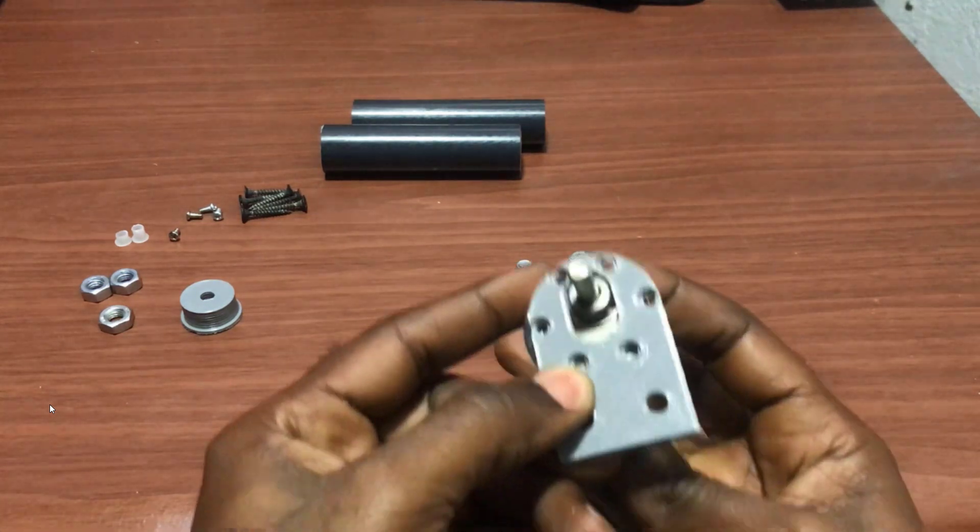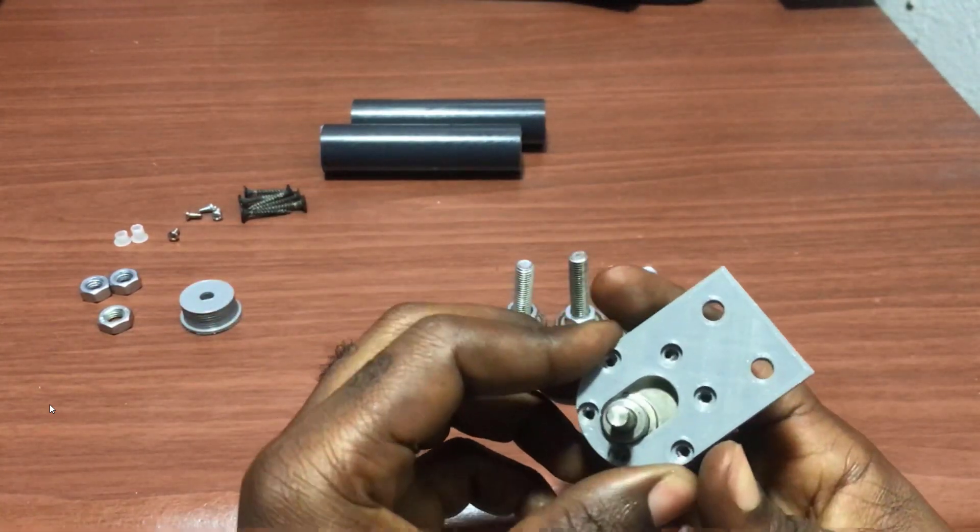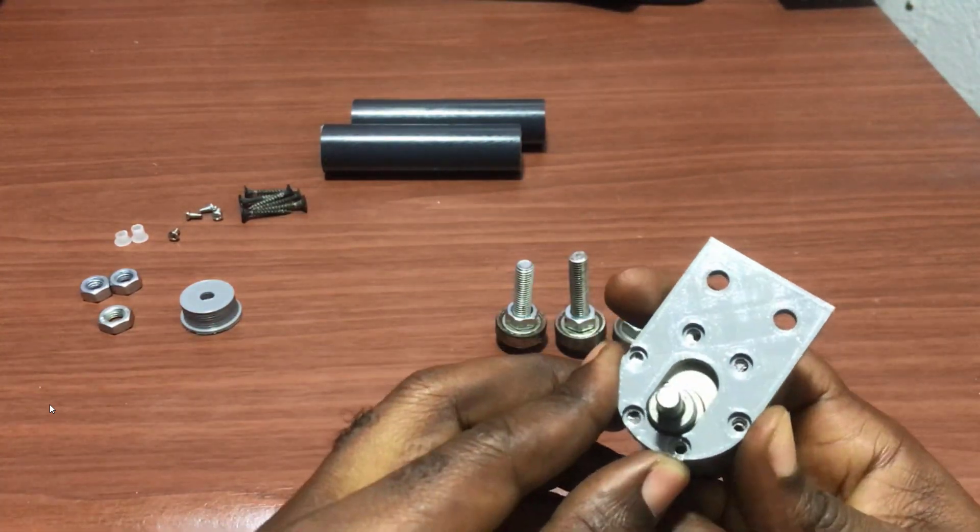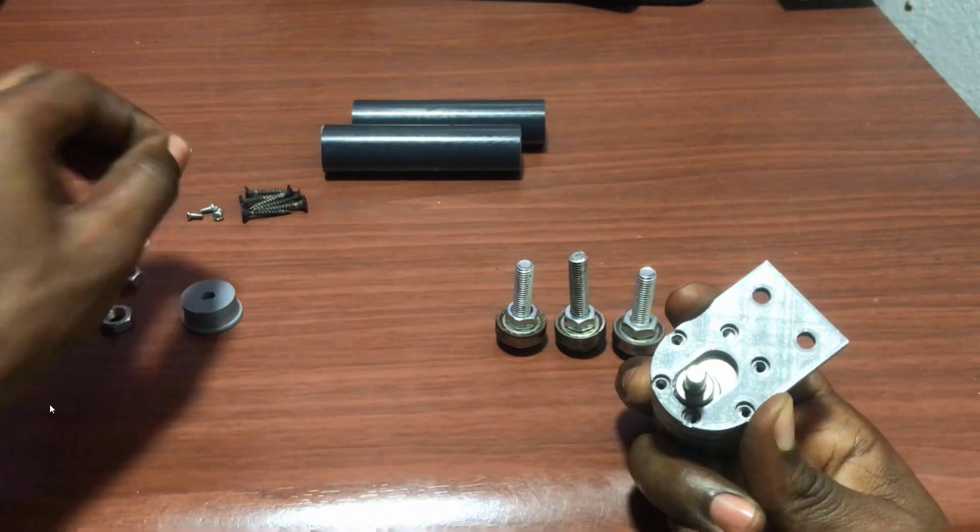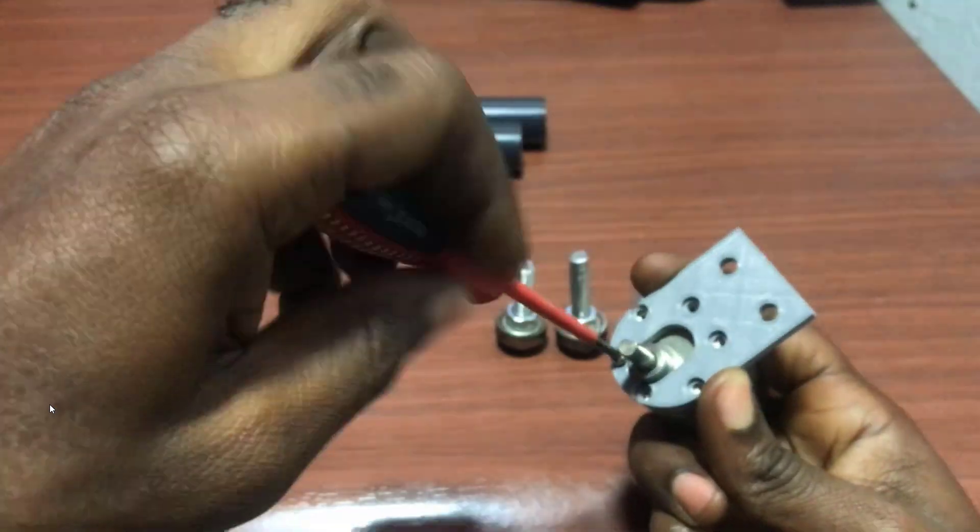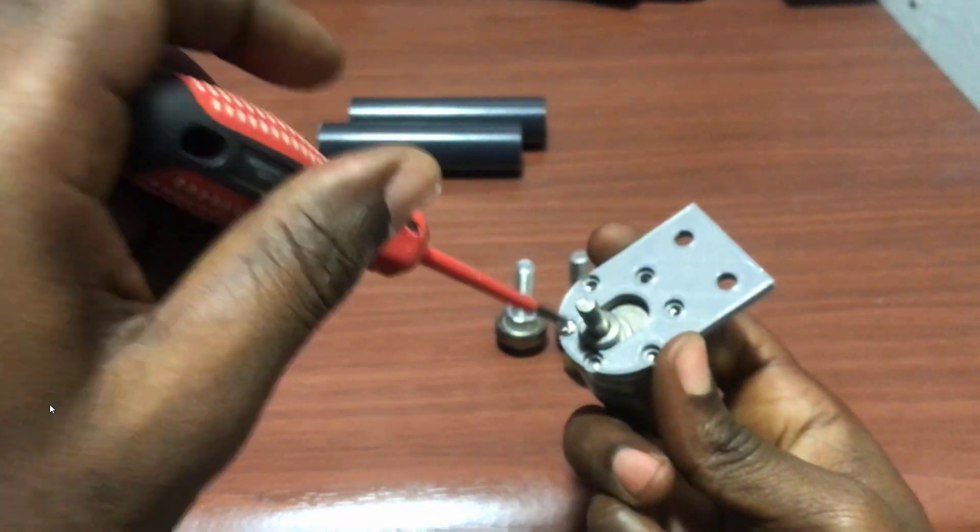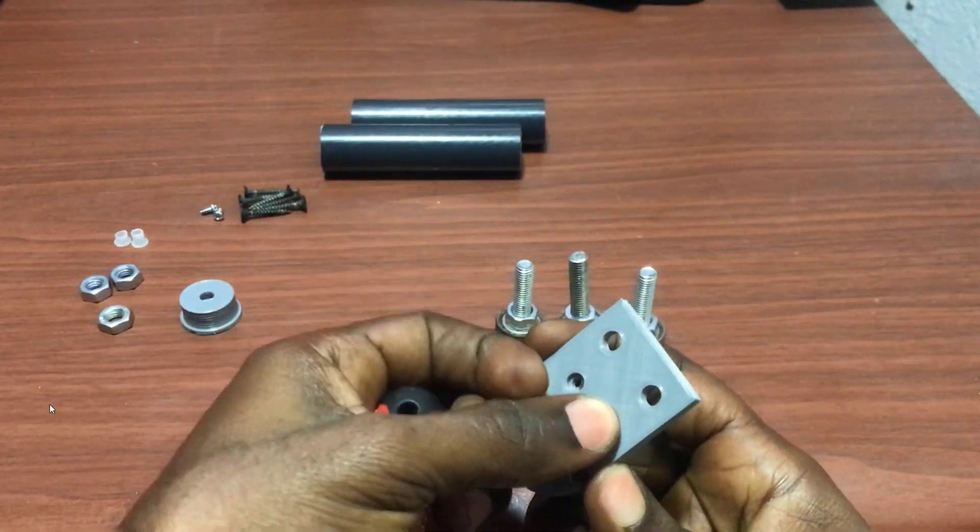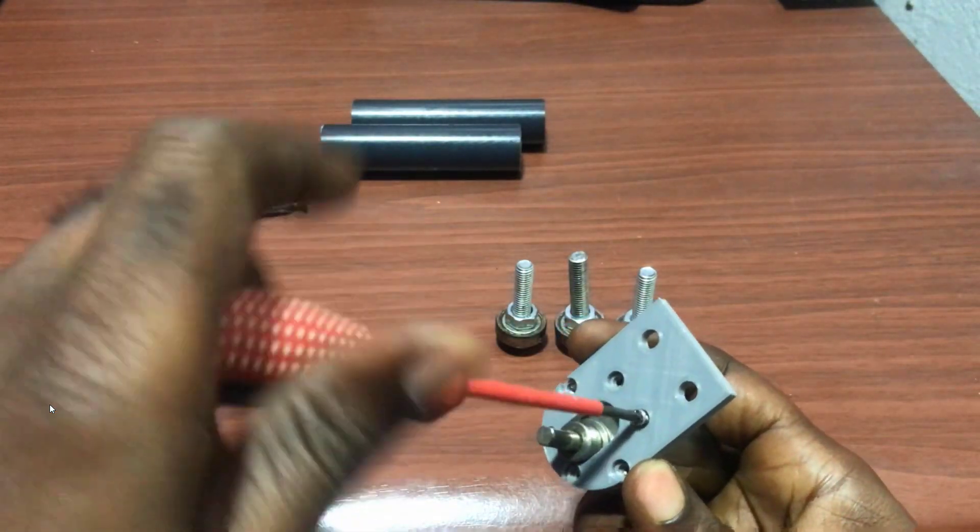We need to fix the bracket now on the motor. We position it correctly. Unfortunately, it's only four of these holes that align with the holes, but four is firm enough for our application.